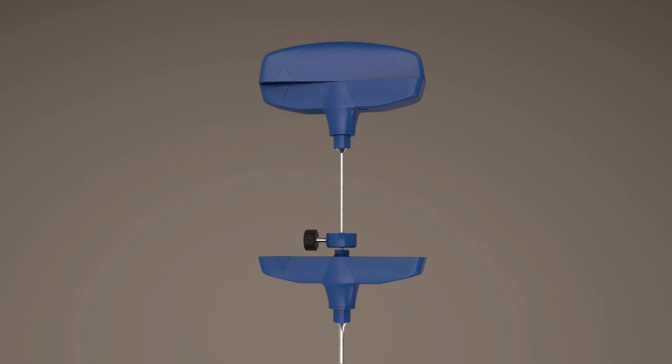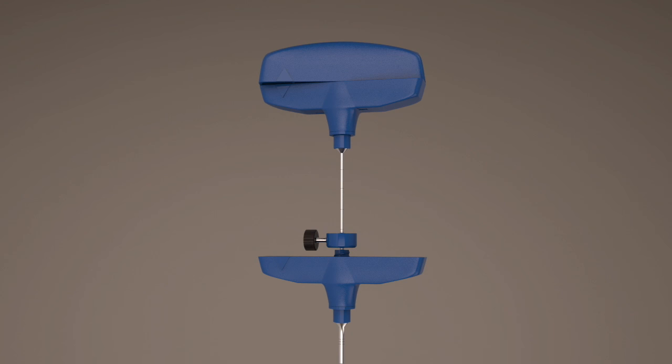If aspiration is required to sample a lytic mass, a syringe may be attached to the luer lock feature.